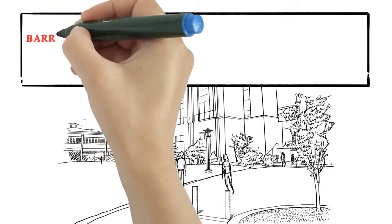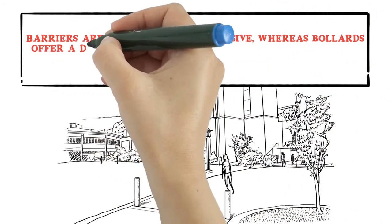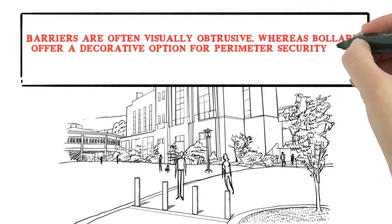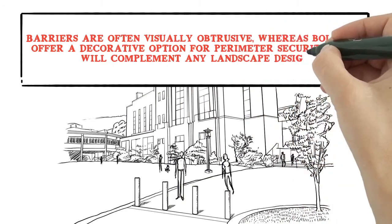Barriers are often visually obtrusive, whereas bollards offer a decorative option for perimeter security that will complement any landscape design.